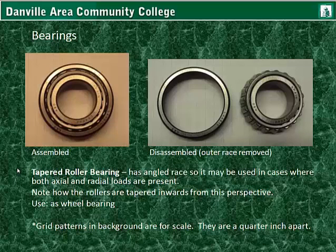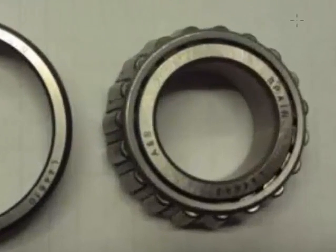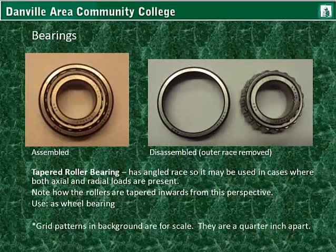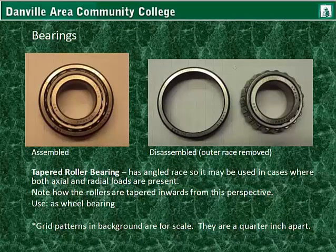Here is a tapered roller bearing. It has an angled race, so it may be used in cases where both axial and radial forces are present. You can see the rollers taper inward towards the top. The use of this type of bearing would be for a wheel bearing on an automobile. Also, these grid patterns shown are for scale — each section is approximately one quarter inch apart.